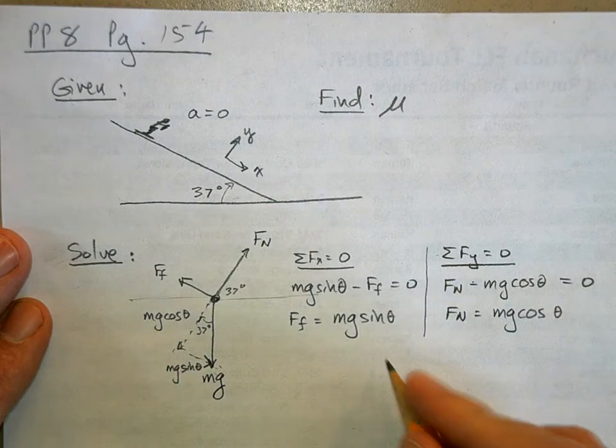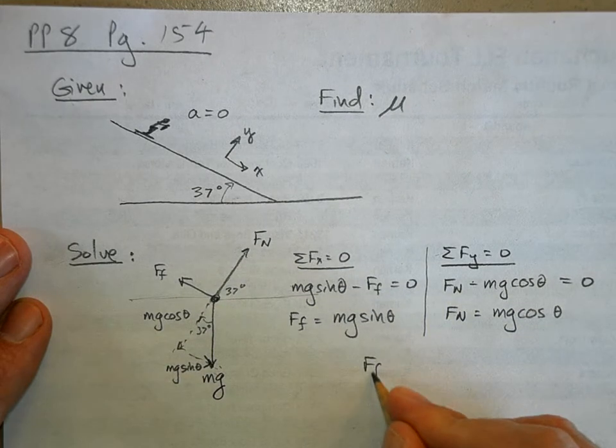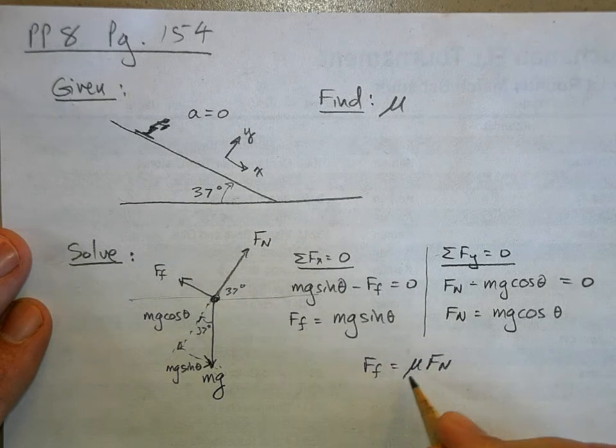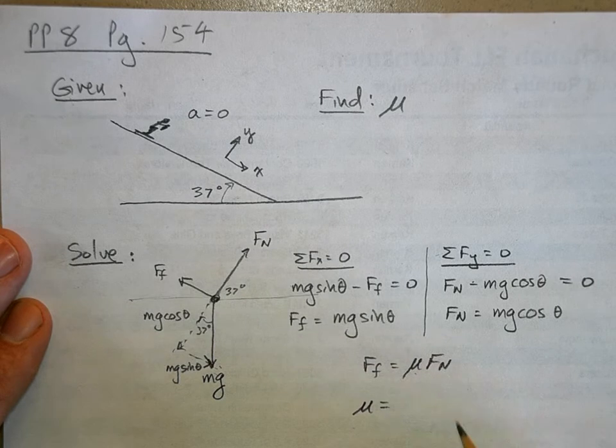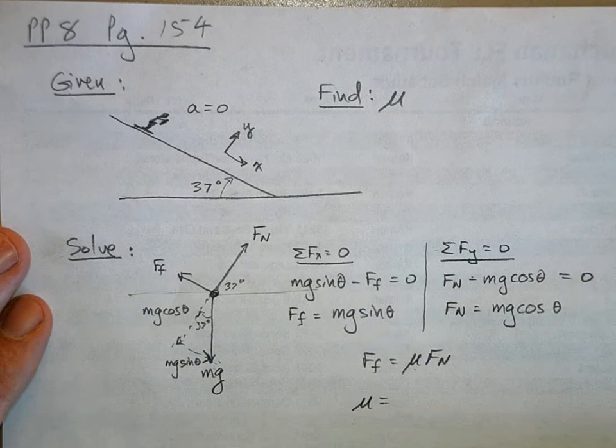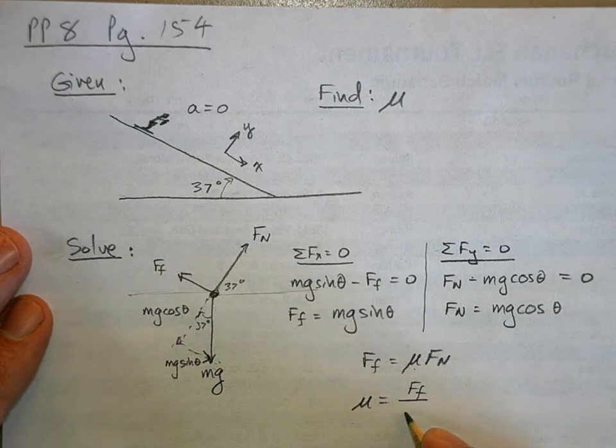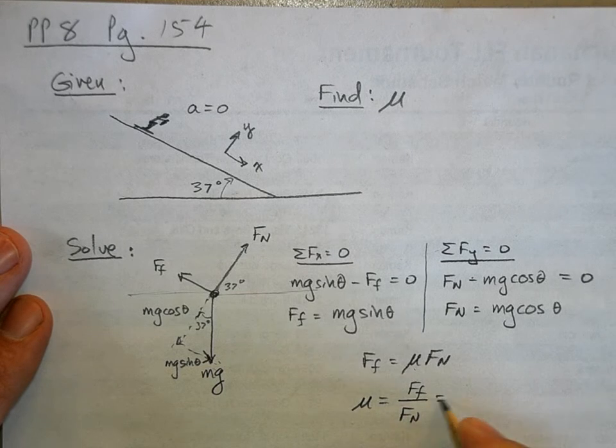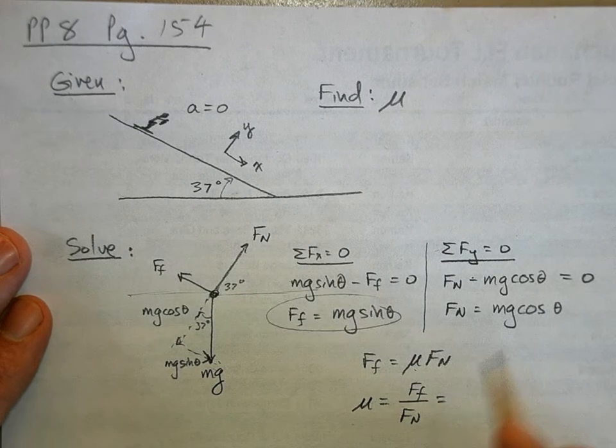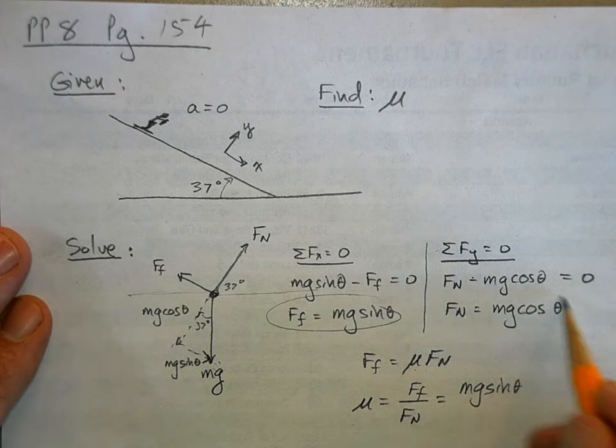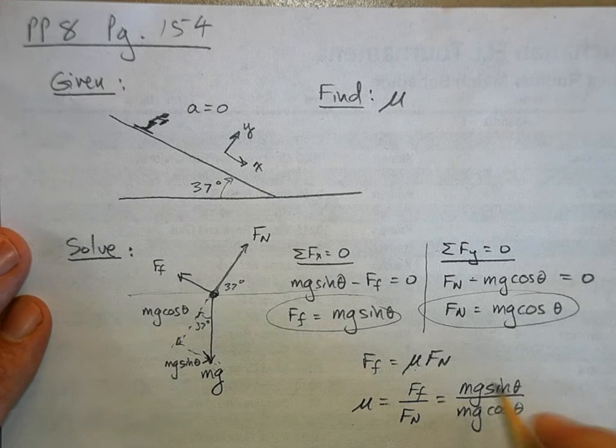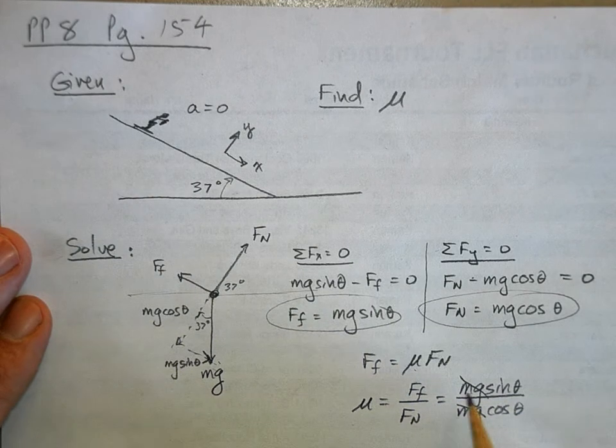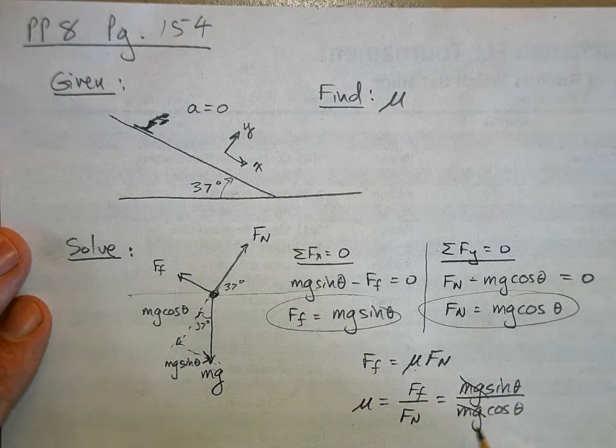Now the force of friction is equal to mu times the normal force. So if we want to find mu, we say mu is equal to the force of friction divided by the normal force. But here we said the force of friction is equal to mg sine theta, the normal force is equal to mg cosine theta. So the mass of the weight of the skier cancels out.